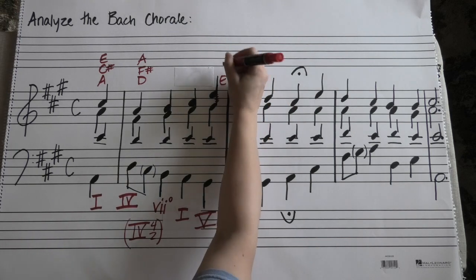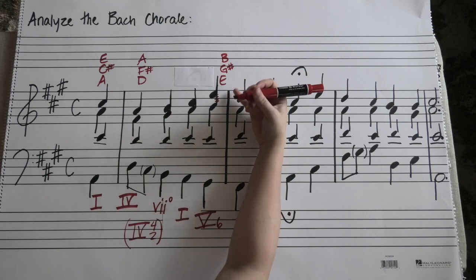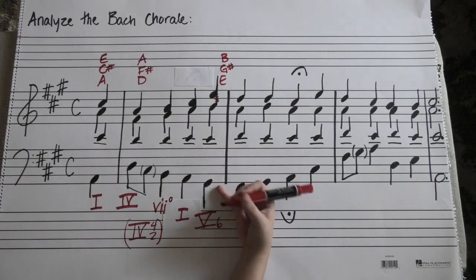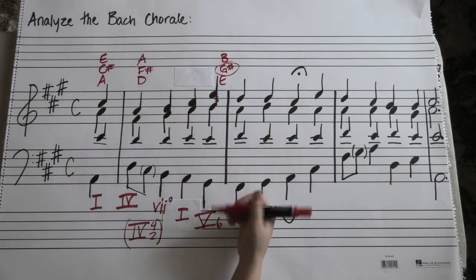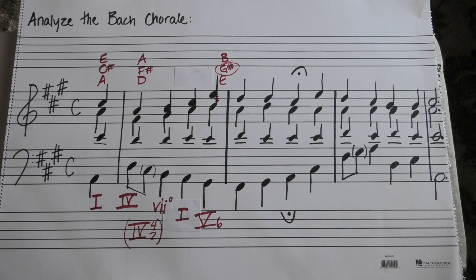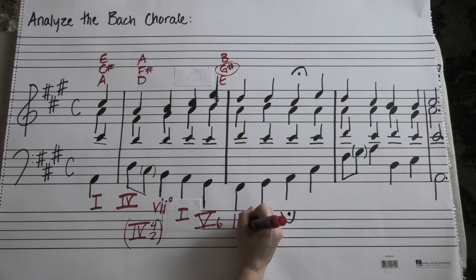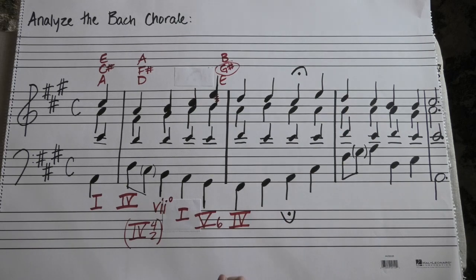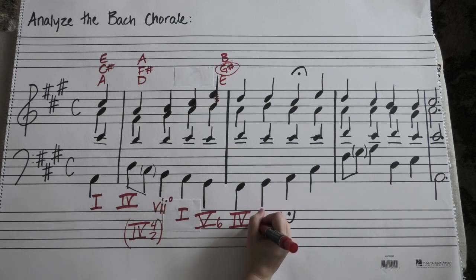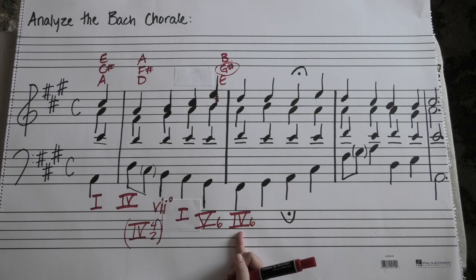So you've got your E, G sharp, B, just like you should for a five chord, but on the bottom is the third. It's that G sharp. So you're actually in first inversion. From there, you move to a four chord. You can see that from the notes that are involved, but again, it's not in root position. It's in first inversion. You've got your F sharp on the bottom.